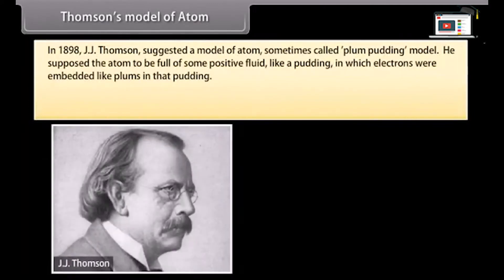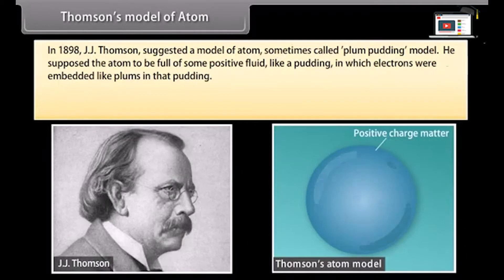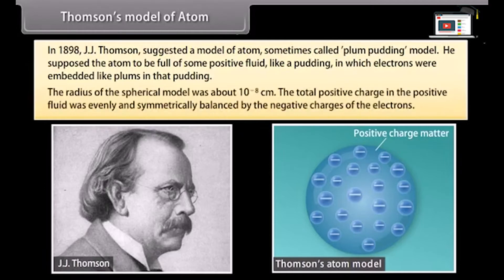Thomson's model of atom: In 1898, J.J. Thomson suggested a model of atom, sometimes called the plum pudding model. He supposed the atom to be full of some positive fluid like a pudding, in which electrons were embedded like plums. The radius of this spherical model was about 10 raised to the power minus 8 cm. The total positive charge was evenly and symmetrically balanced by the negative charges of the electrons. But this model was discarded because it failed to satisfy the results of experiments performed by Rutherford.